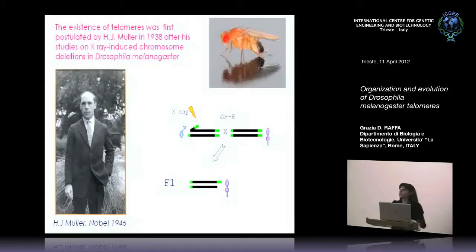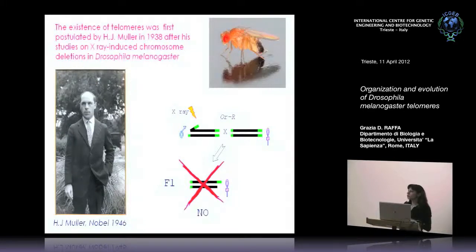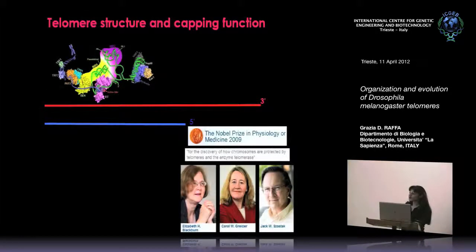The concept of telomeres was first introduced by Muller in 1940. He was a Drosophilist who was studying the consequences of irradiating flies and isolating deleted chromosomes. He soon realized that he was never able to recover terminal deficiency — chromosomes that had lost their terminal ends. He understood that this region is very important for chromosomal stability, called them telomeres, and was awarded the Nobel Prize in 1946.